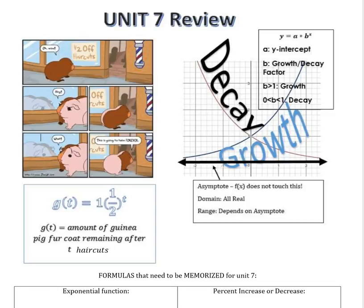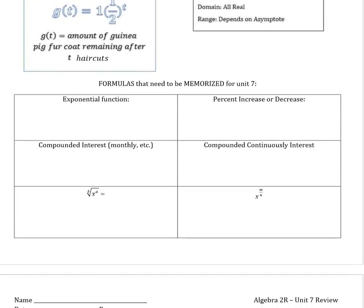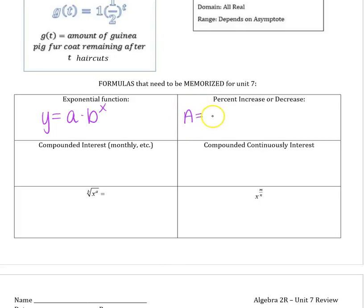For this unit you have some formulas to memorize. First is your basic exponential function: y equals a times b to the x, where a is your initial value and b is your growth or decay factor. When talking about straight increasing or decreasing, we write this as a equals p times 1 plus or minus r to the t, where r is the rate, t is typically years, and p is your initial value.